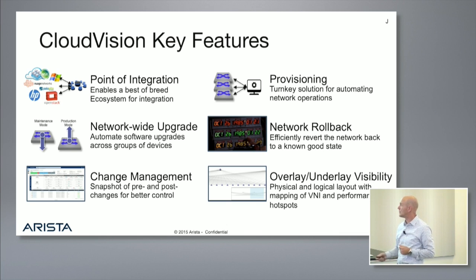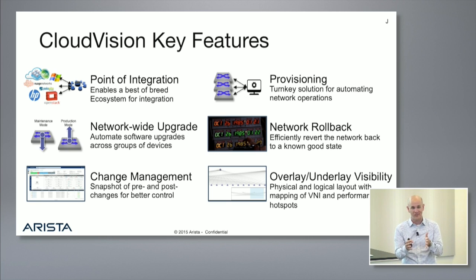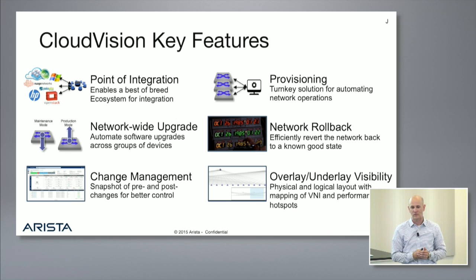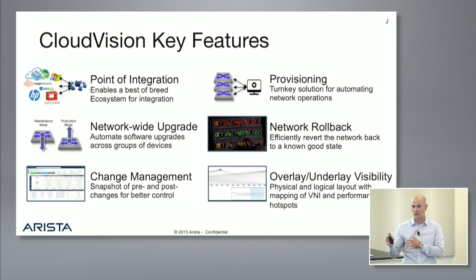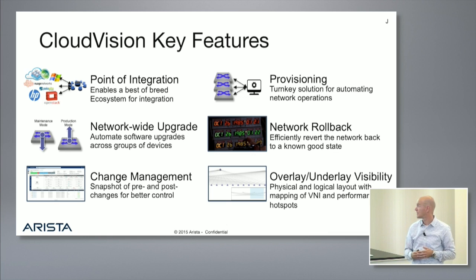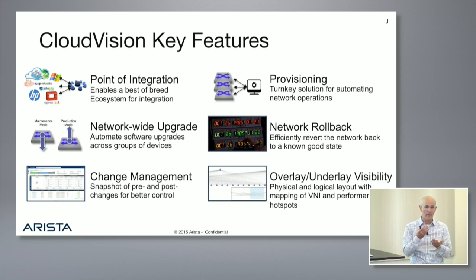We're also focusing on change management with Cloud Vision. A maintenance window includes the actual change but also a lot of pre- and post-checking. If we can automate that — showing customers exactly what the network looked like before the change, what it looked like after, and what the differences are — we can help reduce maintenance window time. And we continue to enhance visibility aspects, making that state visible in the GUI by mapping overlay and underlay data and correlating it all at that one common point.